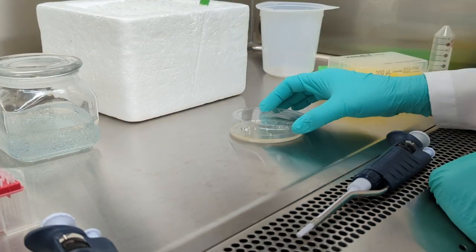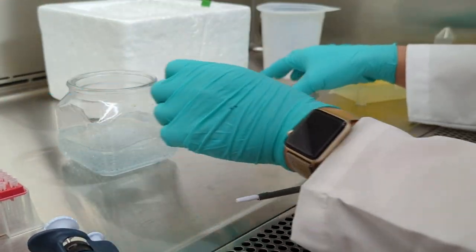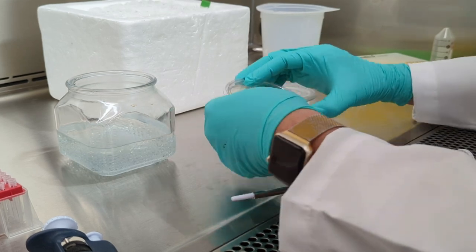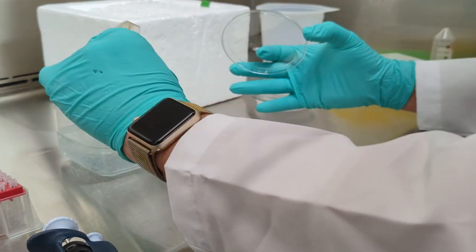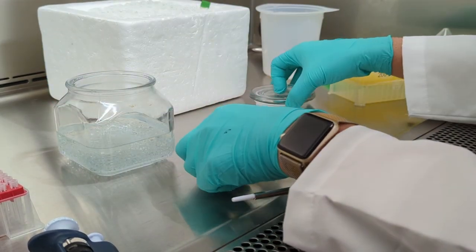One other note, if you use your own vector with antibiotic resistance other than ampicillin, simply add transformation mix into 200 microliters of recovery media and shake for one hour, then plate. Recovery culture is absolutely needed in this case as well.